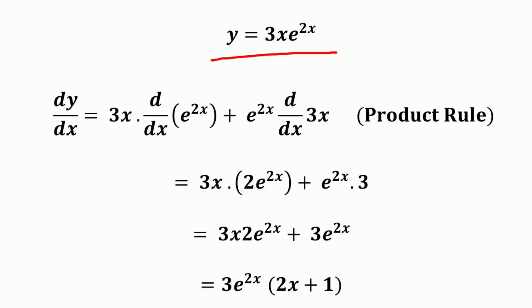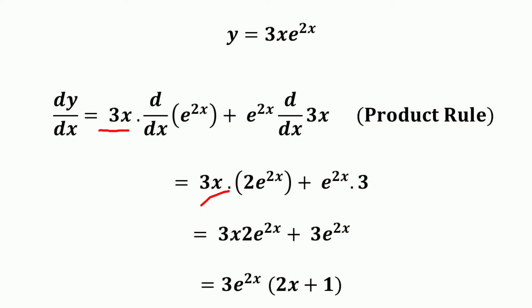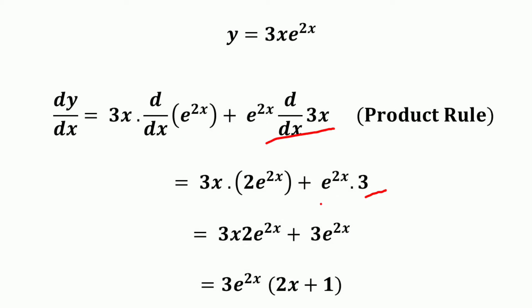Take another example: y = 3x into e raised to the power 2x. Here we have two functions — 3x and e raised to the power 2x — so we can use the product rule of differentiation. The derivative dy/dx equals the first term 3x into the derivative of e raised to the power 2x, plus the second term e raised to the power 2x into the derivative of 3x. The derivative of e raised to the power 2x is 2e raised to the power 2x, and the derivative of 3x is 3.